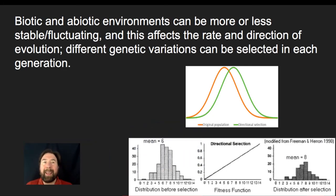We know that biotic and abiotic environments can be more or less stable or have more or less fluctuation, and this affects the rate and direction of evolution. Different genetic variations can be selected in each generation.